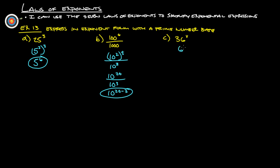36 is 6 squared, times V, so that is 6 to the 2V, because we just multiply those exponents.